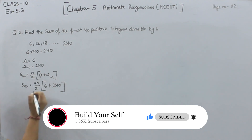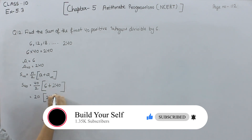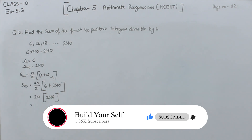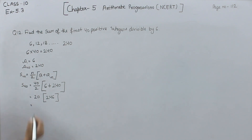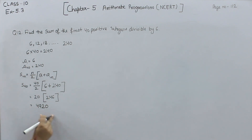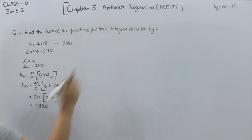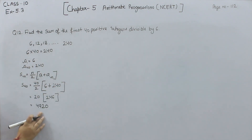40 divided by 2 gives us 20, and 240 plus 6 gives us 246. Multiplying 20 by 246, we get the answer 4920. So the sum of the first 40 positive integers divisible by 6 is 4920.